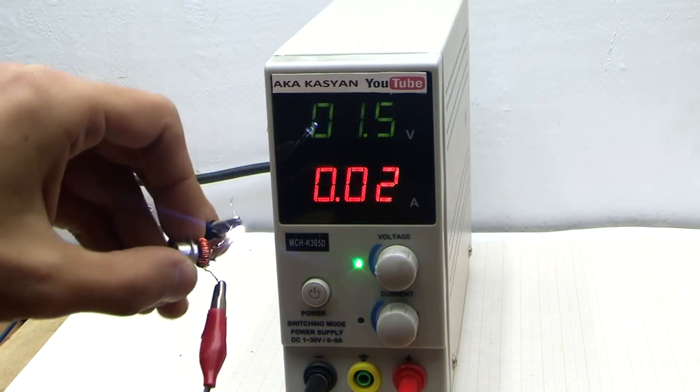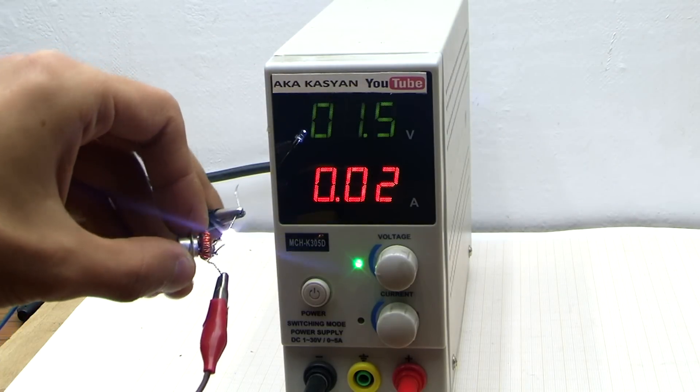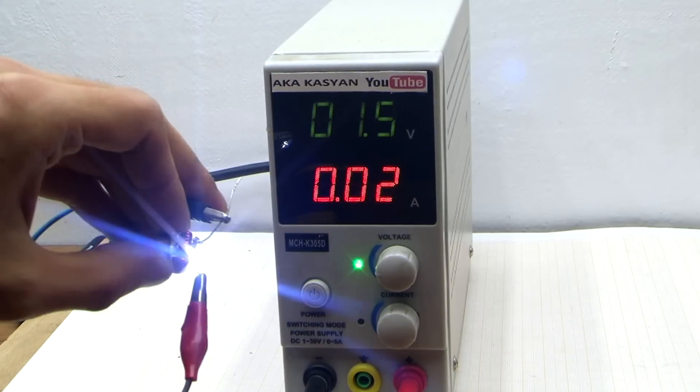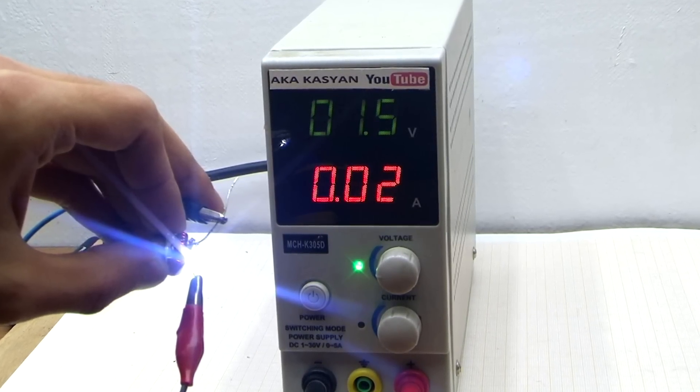Now we check the converter operation. We fit to the input 1.5V, simulating a battery. The LED glows brightly. Everything works well, and we can go further.